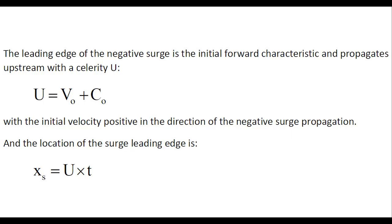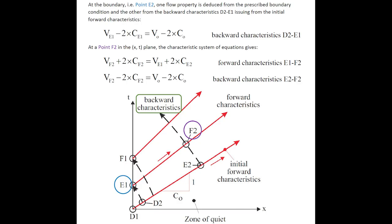The leading edge of the negative surge is the initial forward characteristic and propagates upstream at the celerity u equals v0 plus c0. And its location, xs, is u times t. At the boundary, that is the point e2 in the characteristic diagram, one flow property is deduced from the prescribed boundary condition, and the other from the backward characteristic d2, e1.